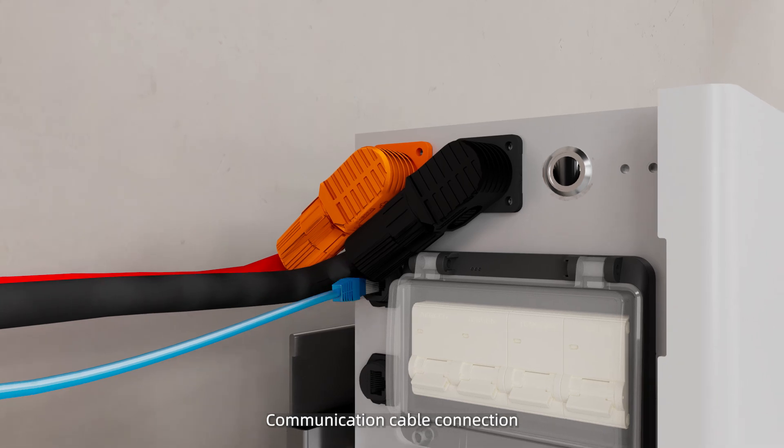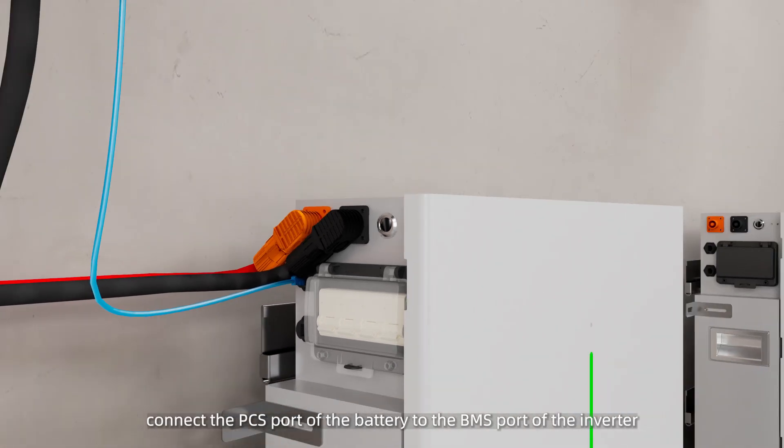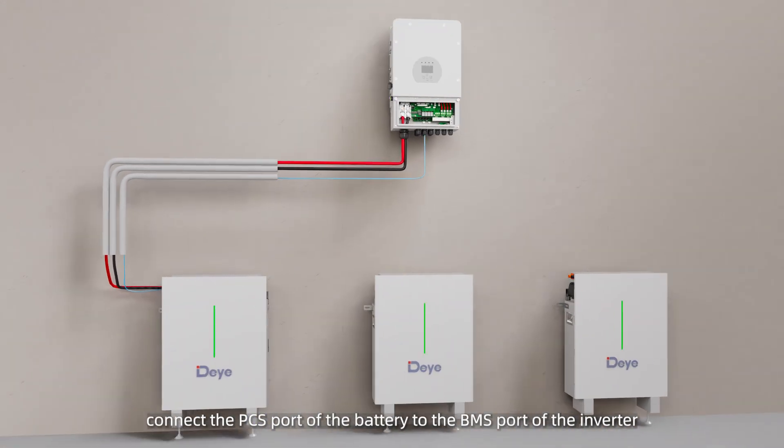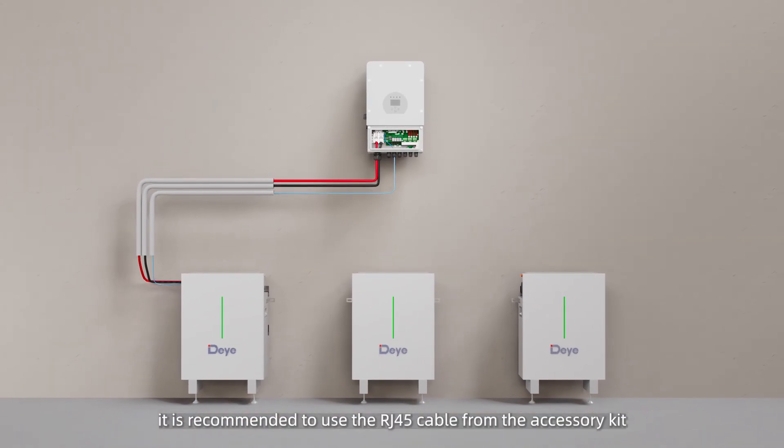Communication cable connection. Connect the PCS port of the battery to the BMS port of the inverter. It is recommended to use the RJ45 cable from the accessory kit.